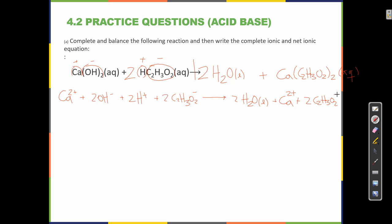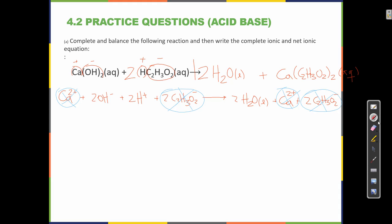So this is my complete ionic equation, where everything that is aqueous has been broken apart. Now I'll locate the spectators. Calcium is a spectator and acetate is a spectator. Cancel, cancel, cancel. Then I rewrite what is left over, and we put the positive in front. So two H+ plus two OH- makes two H2O liquid.